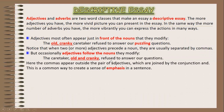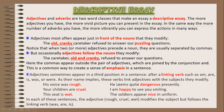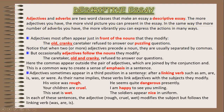Some adjectives are always placed before a noun, while others are placed after. The comma appears outside the pair of adjectives joined by a conjunction, which is a common way to create emphasis. Adjectives sometimes appear after a linking verb such as am, are, is, was, or were — these verbs link adjectives with the subjects they modify. Examples: 'His voice was rough.' 'Your children are cruel.' 'This seat is wet.' 'He seems quite dangerous presently.' 'I am happy to see you smiling.' 'The soldiers appear nice in uniform.'